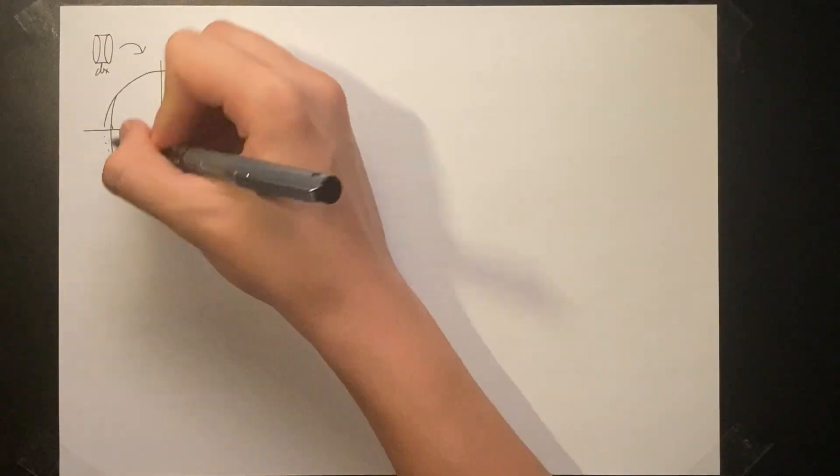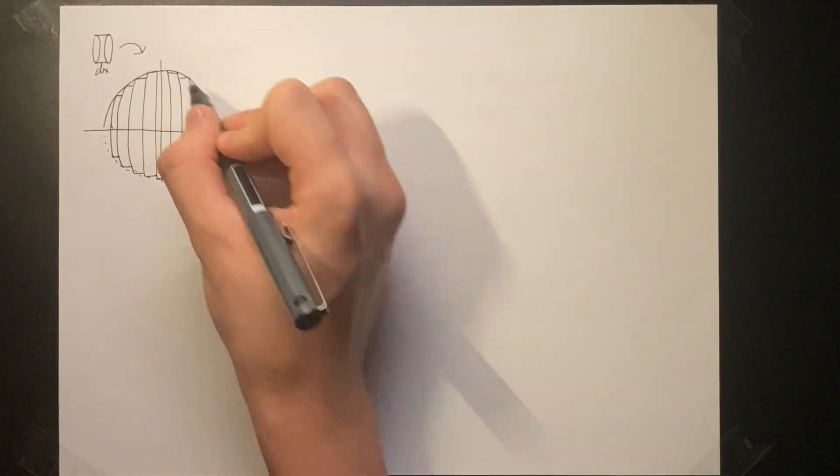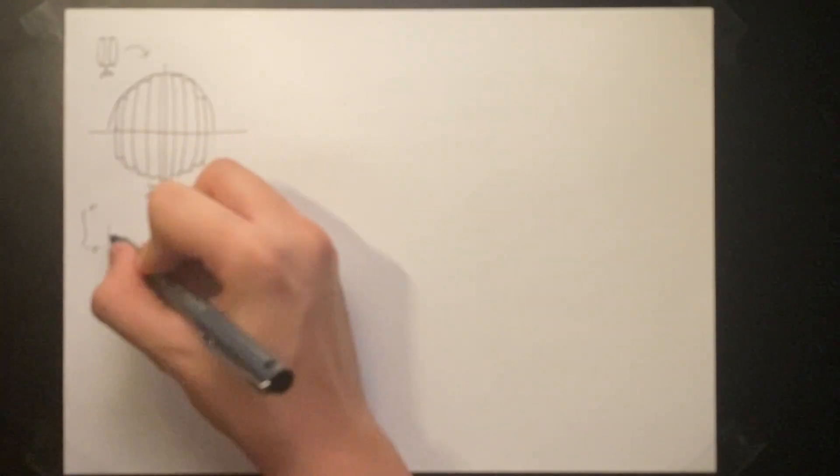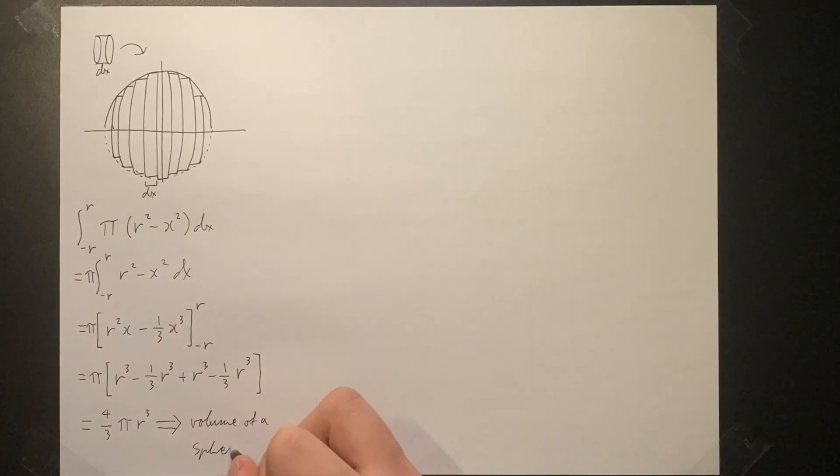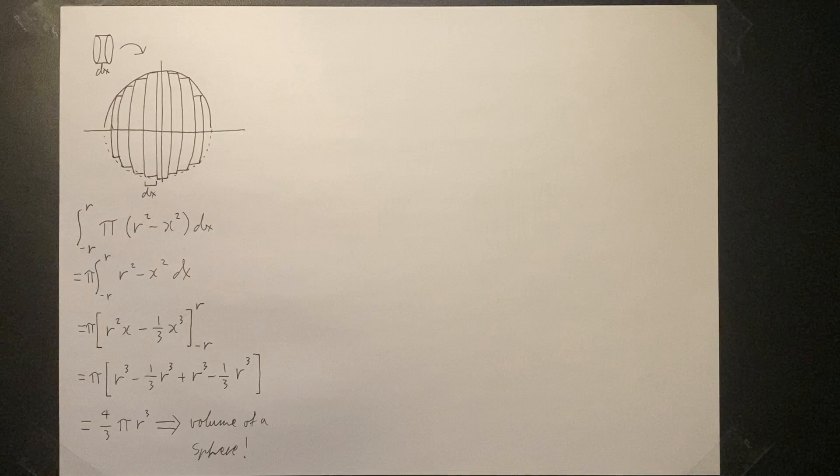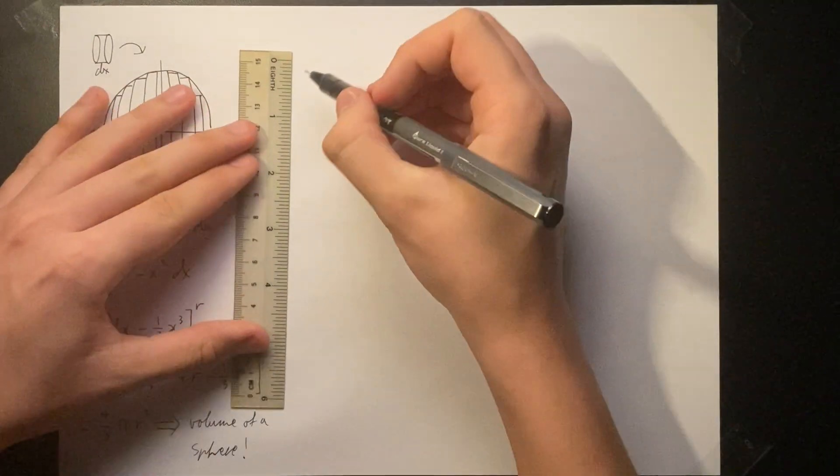The sum of all these infinitesimal cylinders that make up the sphere, or the integral of our rotated function, should be exactly equal to the volume of a sphere. We can set up this integral and solve it quite easily. This results in the equation for the volume of a sphere with radius r.